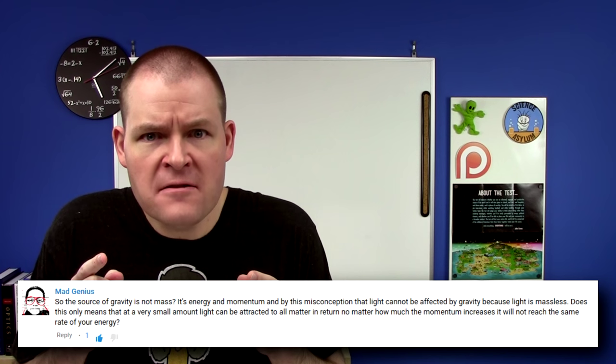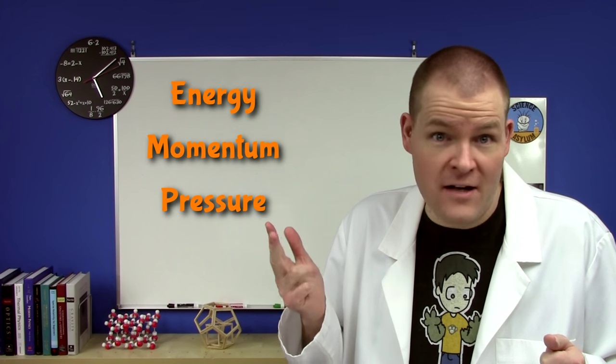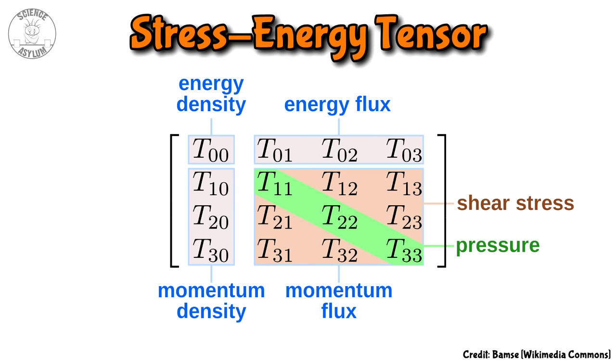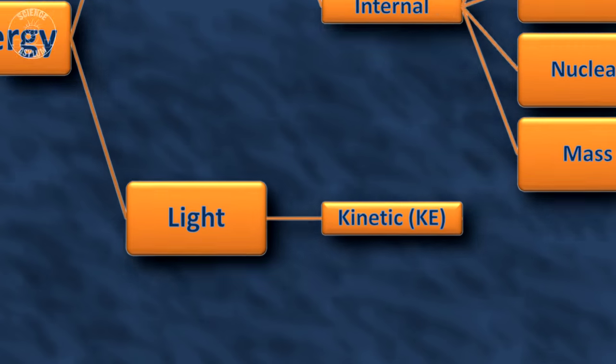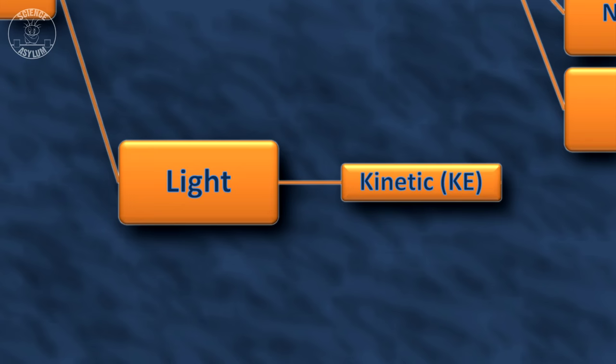So the source of gravity isn't mass? Nope, it's energy. Well, technically it's energy and momentum and pressure and stress — all summarized in a quantity called the stress-energy tensor. Meaning anything with energy and momentum can curve spacetime and create gravity, including light. Light might not have any mass, but it has energy and momentum. It's all kinetic energy, but it's still energy — it still has the ability to do stuff.